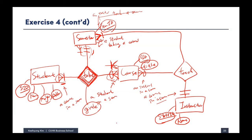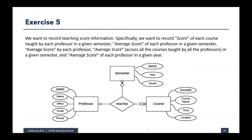That's the final ER diagram to store all the information from exercise four. Exercise five is the last exercise in this class. It's about where to store information — specifically, we want to record the teaching score of each course taught by each professor in a given semester.